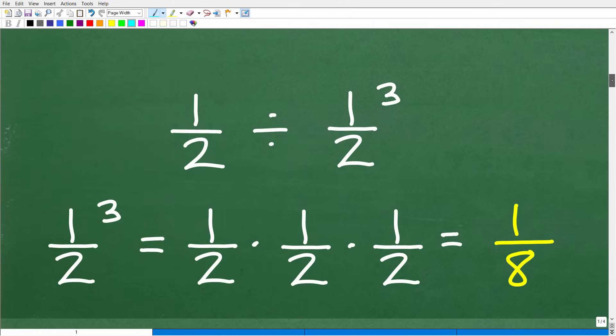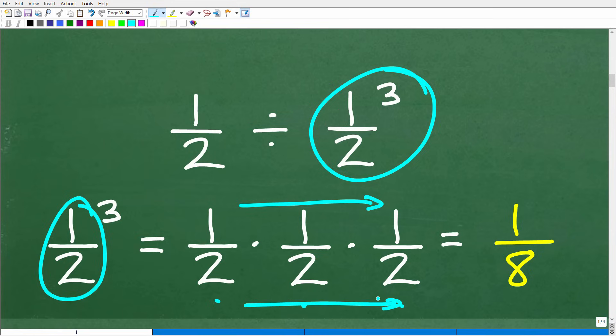Okay, so 1 half divided by 1 half cubed. I've got to figure out what 1 half cubed means. And what does that mean? Well, it means 1 half cubed means take 1 half and multiply it by itself 3 times. And, of course, we're multiplying fractions. So, when we multiply fractions, we simply multiply the respective numerators times the respective denominators. So, 1 times 1 is 1. 2 times 2 times 2, of course, is 8. So, 1 half cubed is equal to 1 eighth.